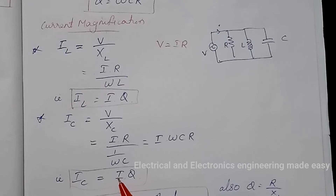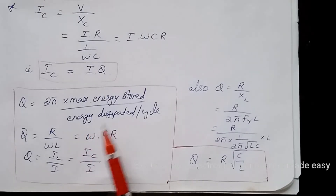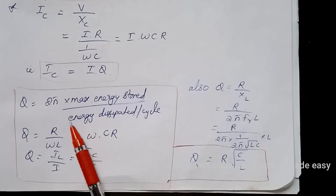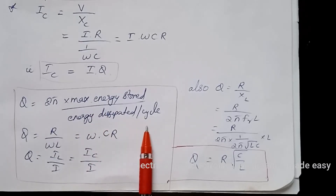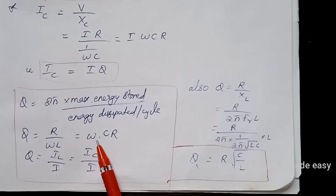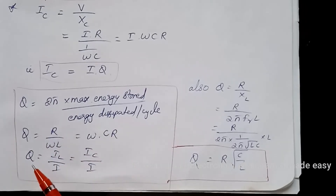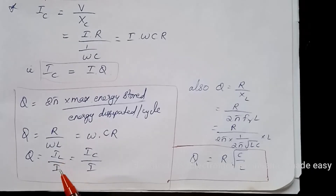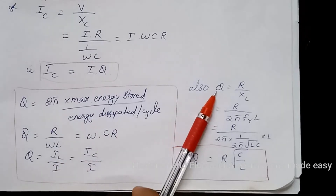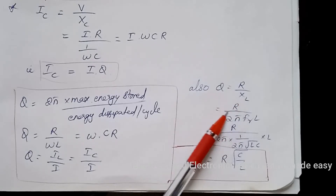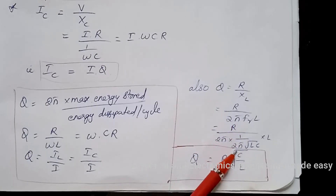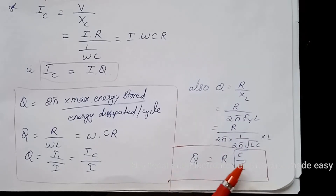The important formulae in this section are: Q equals 2·pi times maximum energy stored divided by energy dissipated per cycle; Q equals R by omega·L equals omega·C·R; Q equals I_C by I, also I_L by I; and Q equals R by XL, where XL equals 2·pi·fr·L. Substituting for the resonant frequency 1 by 2·pi·root(LC), we get Q equals R times square root of C by L.